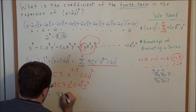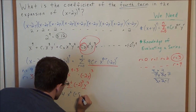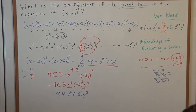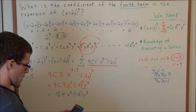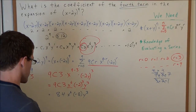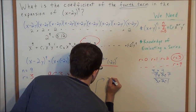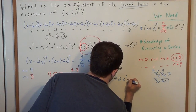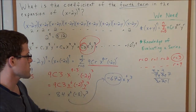So in the next line we have eighty-four times x to the sixth. Negative two to the third power is negative eight, so we have negative eight times y to the third. Now using the calculator, we're looking at eighty-four times negative eight, which gives us negative six hundred seventy-two. So the final step gives us negative 672 x to the sixth y to the third, and our answer — the coefficient — is negative six hundred seventy-two.